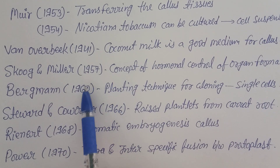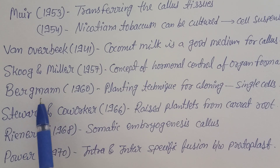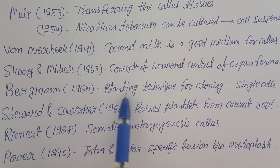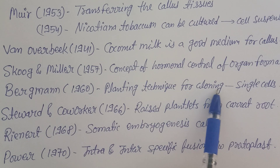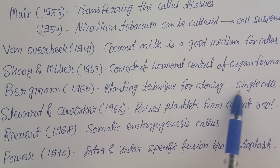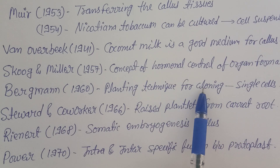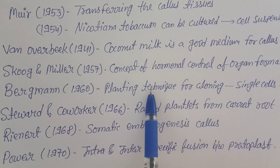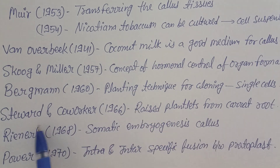Bergman in 1960 told about the planting technique for cloning a single cell — how cloning can be done from a single cell. This planting technique was told and demonstrated by Bergman in 1960.